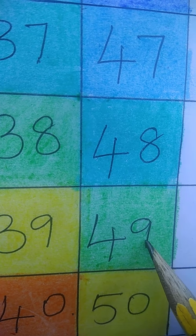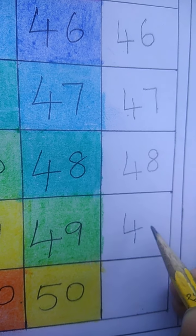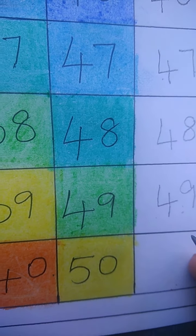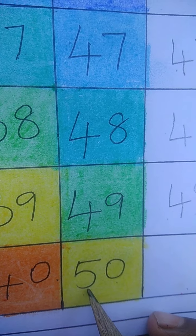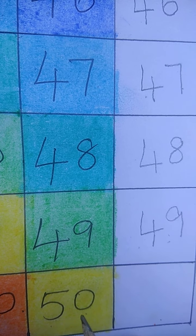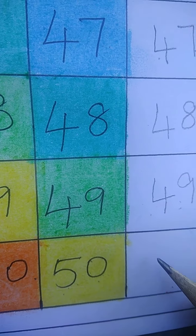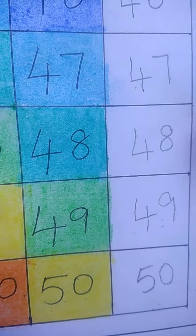48. Next 4 9 49. Write 4 then 9. 4 9 49. Then finally 5 0 50. We have to say 5 0 50. Let's write 5 0 50.